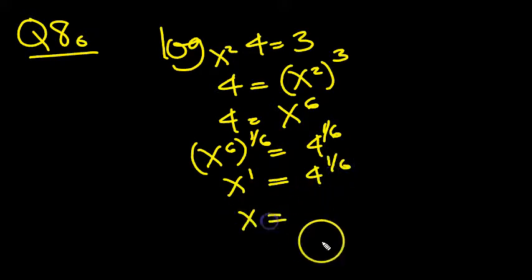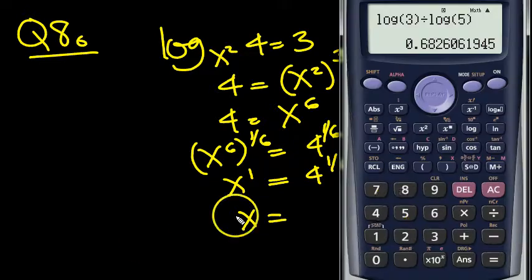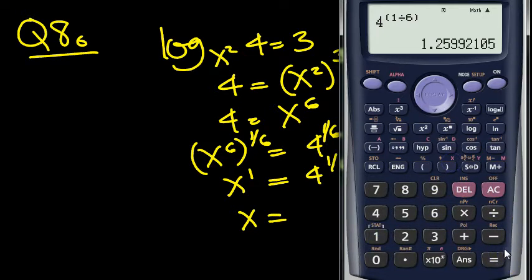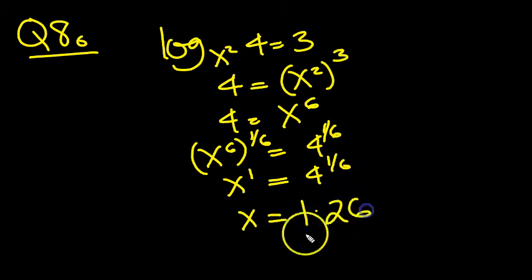So x equals 4 to the power 6, 4 power bracket 1 divided by 6, equals 1.26. There we go. Good.